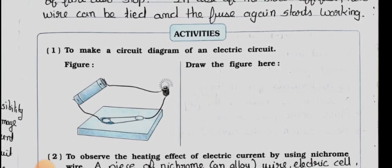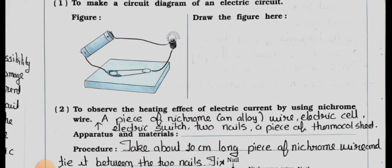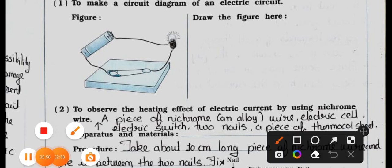Now see the activities. Activity 1: To make a circuit diagram of an electric circuit. See the figure is there, here you have to draw the figure. In this case you have to draw the figure. Now see question number two.